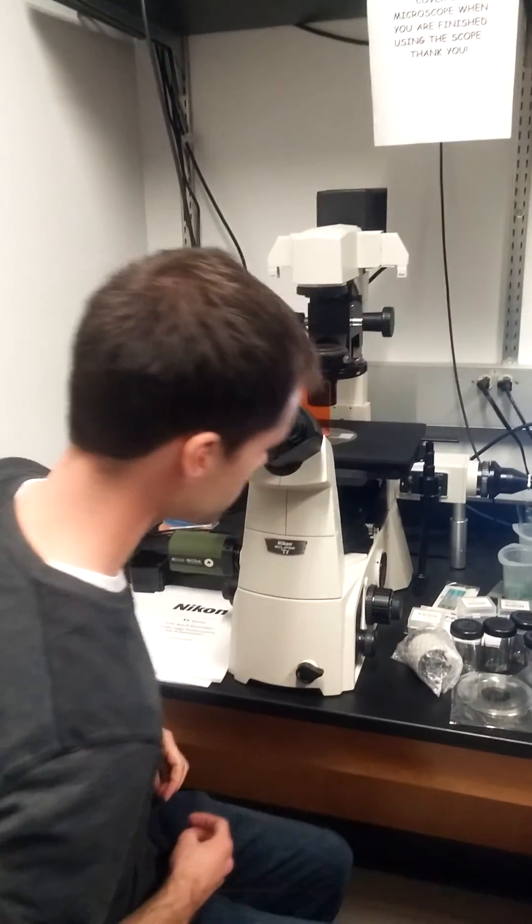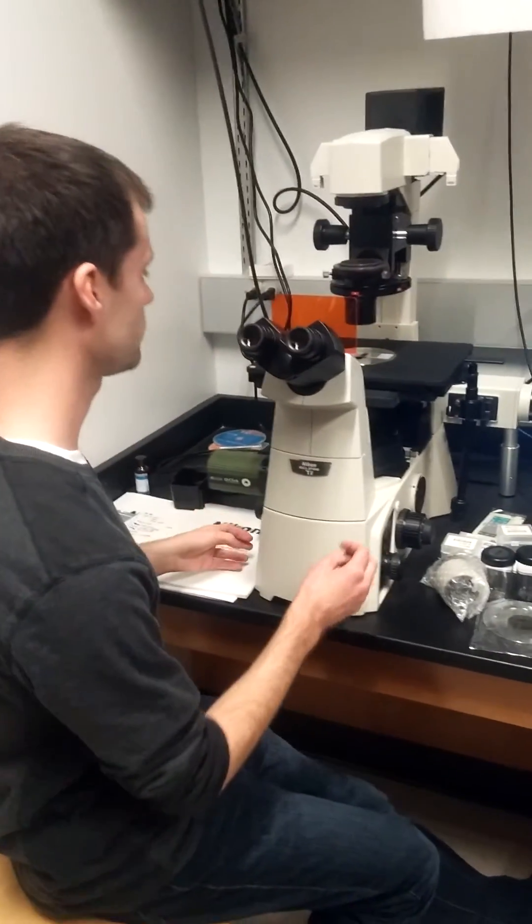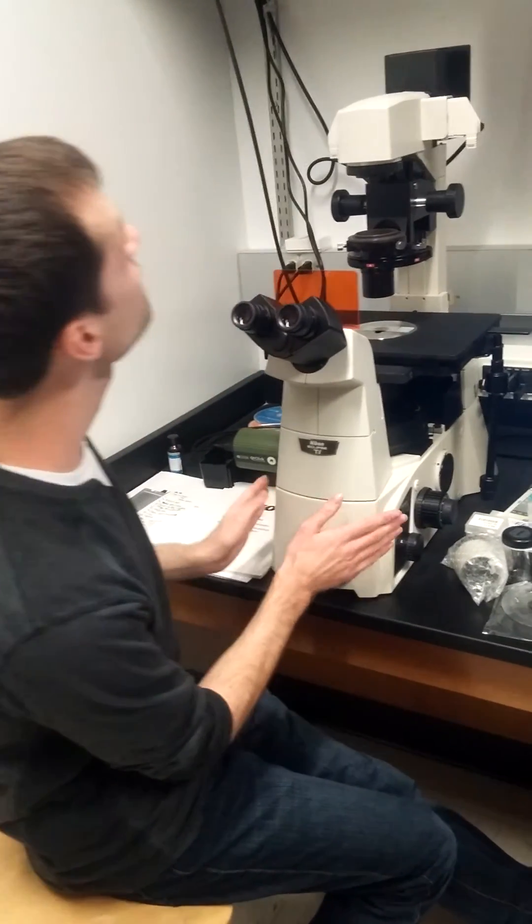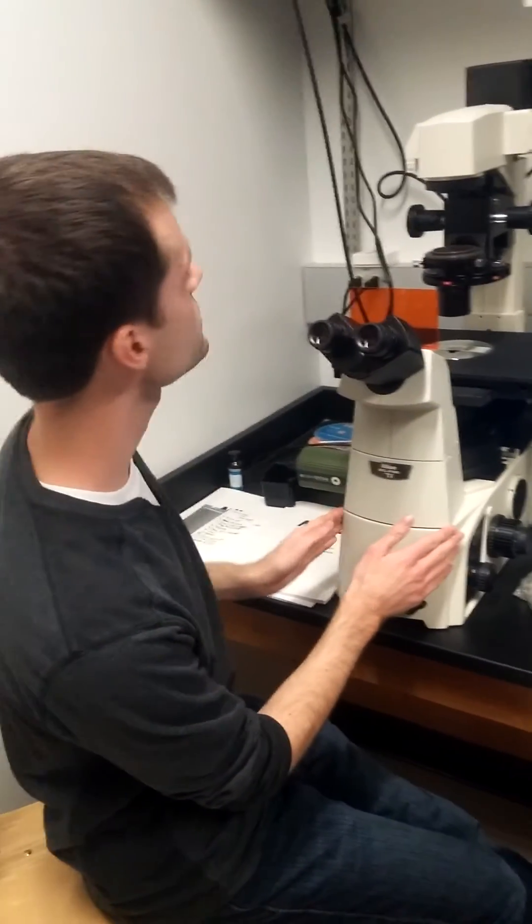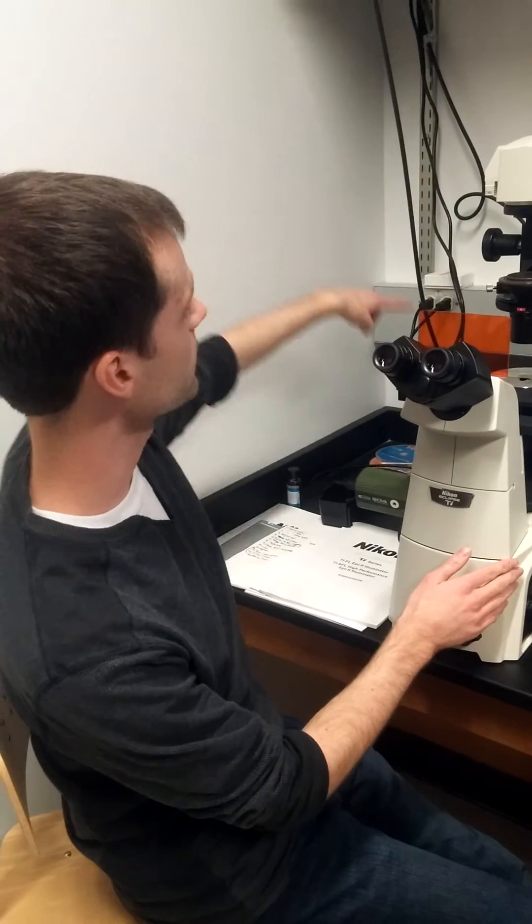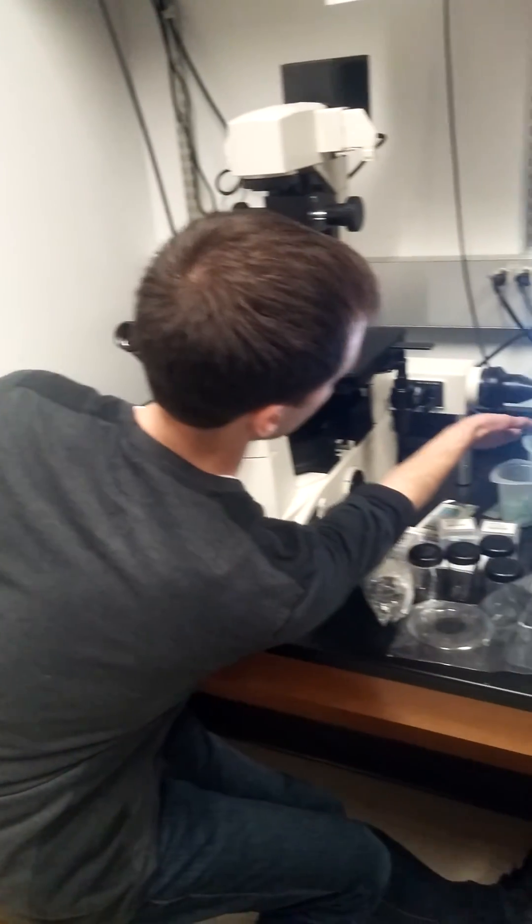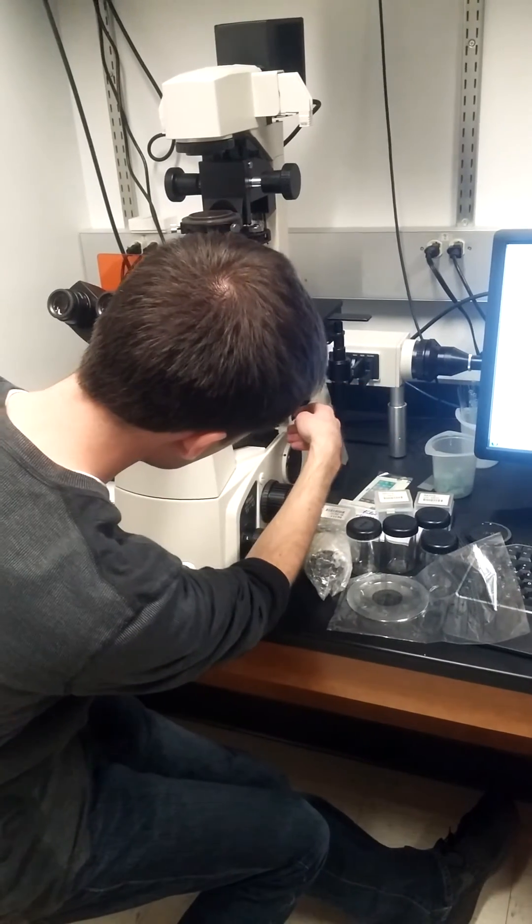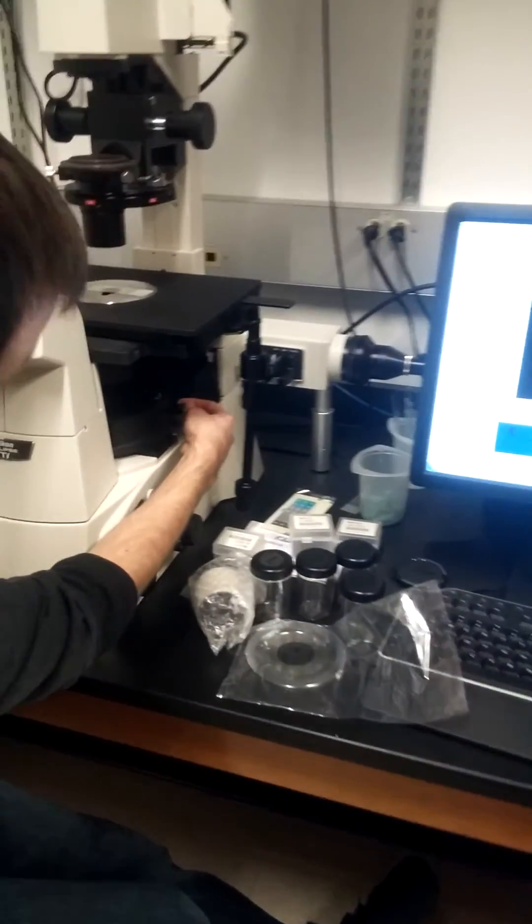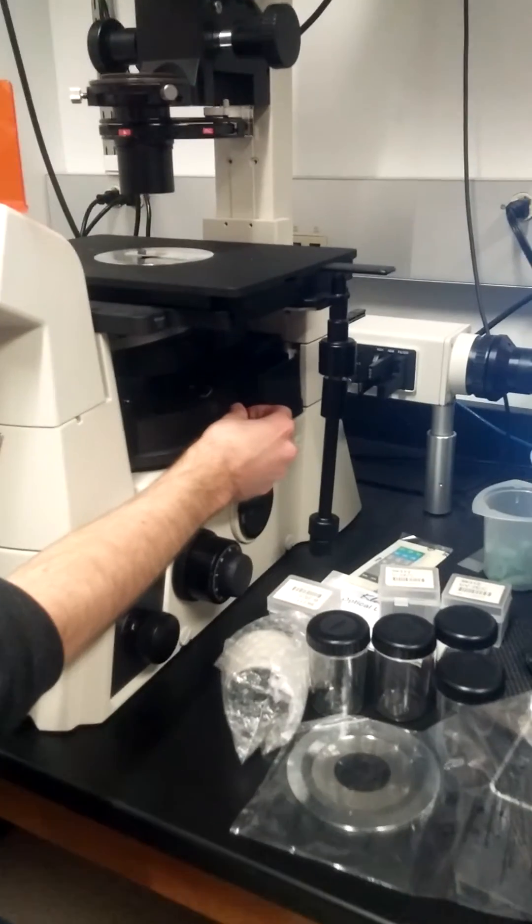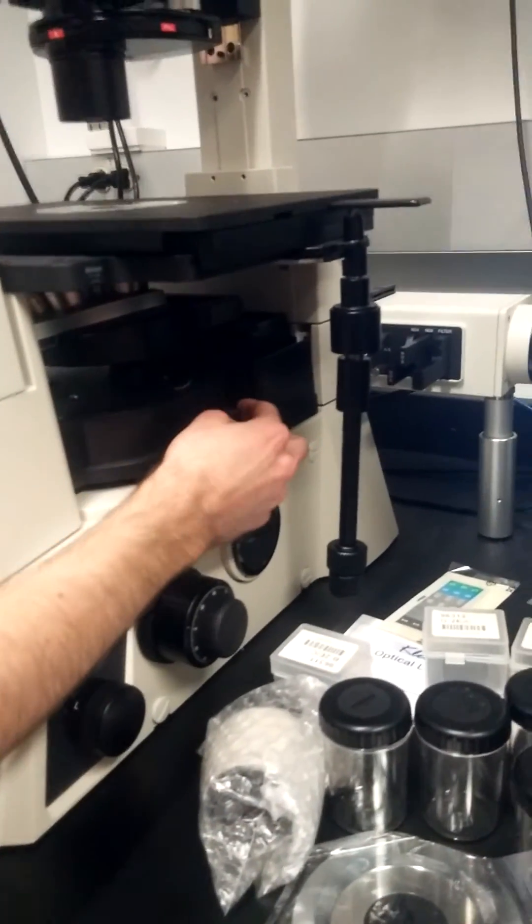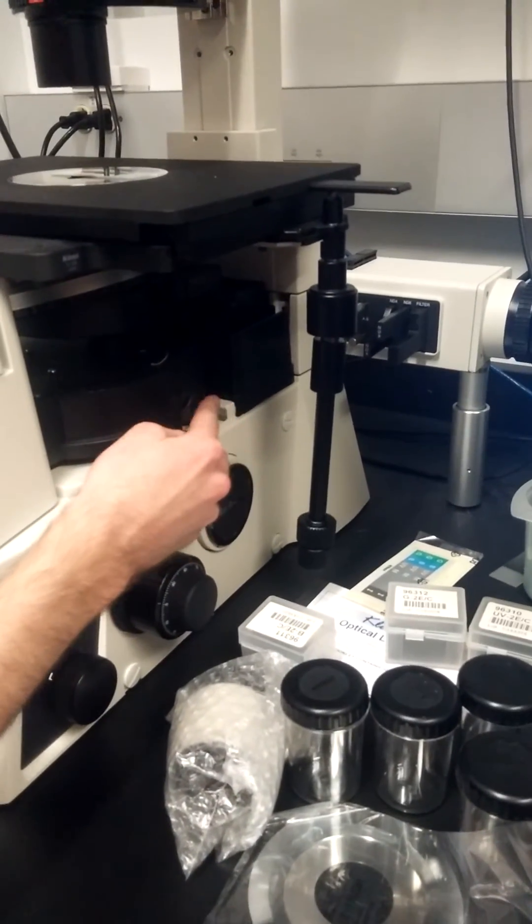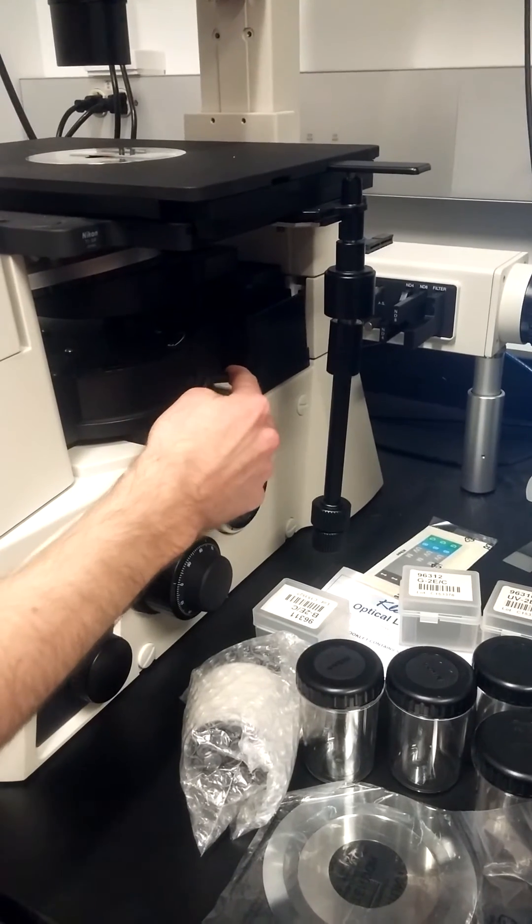To adjust how the fluorescence enters the microscope, it's going to run through this fiber optic cable here into here. And essentially we can shutter whether or not the fluorescence is making its way to our specimen by opening and closing this dial here.